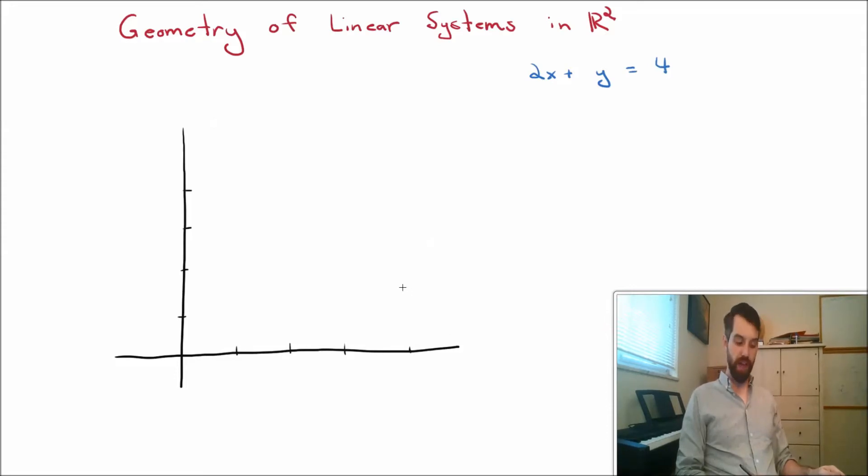So in this case, I have a coefficient 2. If you prefer, you can imagine that there's a coefficient 1 sitting in front of the y there, and then it's equal to some constant 4. Now, we've seen equations like this. In fact, I could manipulate it and write it like this: y equal to minus 2x plus 4, taking the 2x to the other side.